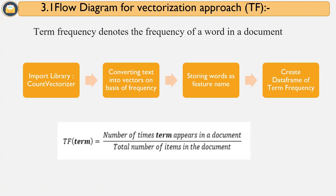Coming to the main topic, which is vectorization — vectorization is an important process where we convert words into numbers. There are many ways to do vectorization; some of them are bag of words, term frequency, TF-IDF, word2vec, and GloVe. Here we have used term frequency, TF-IDF, and word2vec. We will see them one by one.